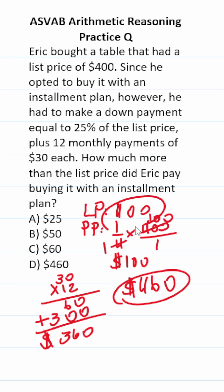Clearly, that is $60 more than the list price. Once again, $460 minus 400 is $60.